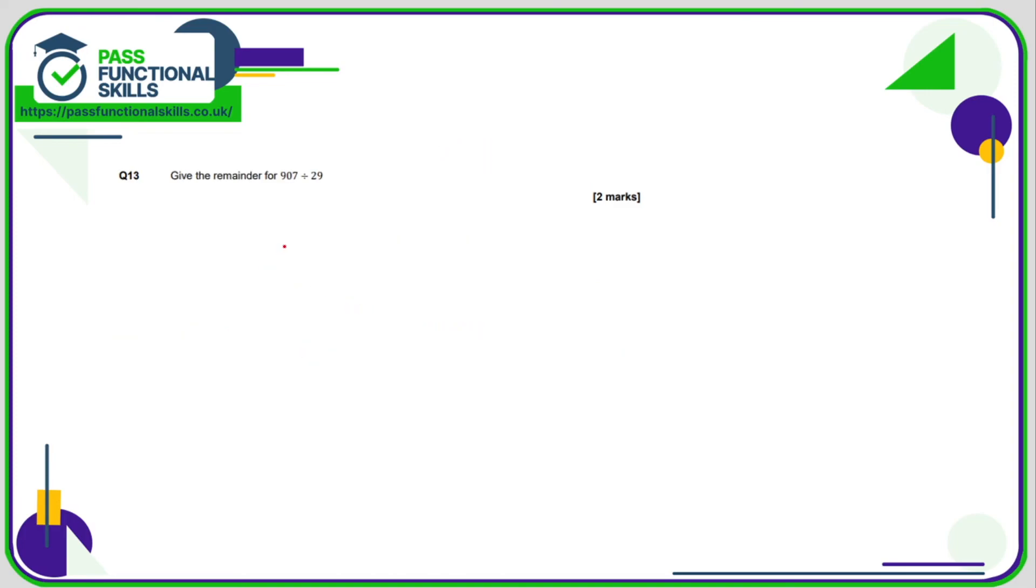Question number 13 is fairly horrible, but luckily you can use a calculator. We're not expecting 907 to be divided by 29 exactly because they've asked us to give a remainder. If we type it into our calculator, we get 31 point some crazy decimal number. So we know that 31 times 29 is going to be under 907. What is 31 times 29? 31 times 29 comes to 899. If we do 32 times 29, we're going to overshoot the 907. What is the difference between 899 and 907? That's a difference of 8, so the remainder is 8.